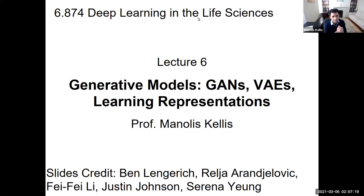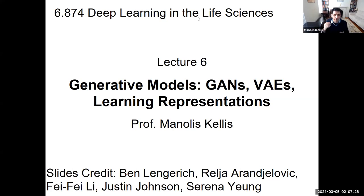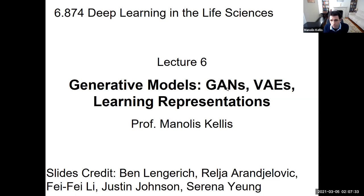Welcome everyone. Today we're talking about generative models — models that can actually create stuff in the world and model the world, not just discriminate but actually generate. We're going to look at two of the most popular models: generative adversarial networks and variational autoencoders.